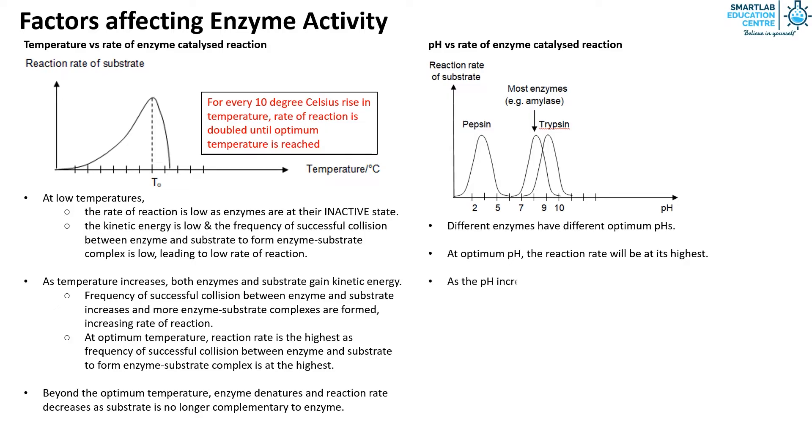As the pH increases or decreases from its optimum, the rate of reaction decreases due to denaturation of the enzyme. pH can alter how the enzyme folds thus altering the shape of the active site which in turn affects the formation of enzyme-substrate complexes.